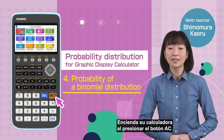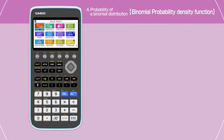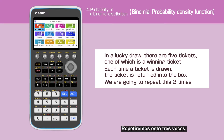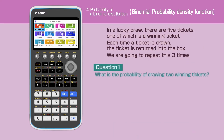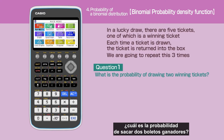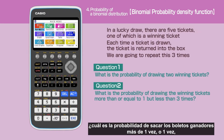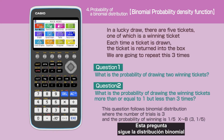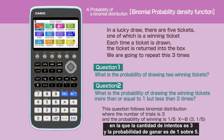Switch on your calculator by pressing the AC button. In a lucky draw, there are five tickets, one of which is a winning ticket. Each time a ticket is drawn, the ticket is returned into the box. We are going to repeat this three times. Question 1: What's the probability of drawing two winning tickets? Question 2: What's the probability of drawing the winning tickets more than or equal to one, but less than three times? This question follows binomial distribution, where the number of trials is three and the probability of winning is one over five.